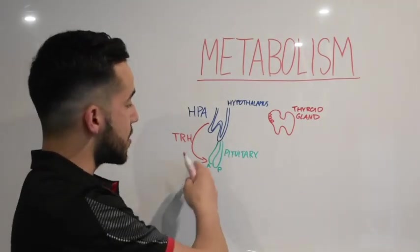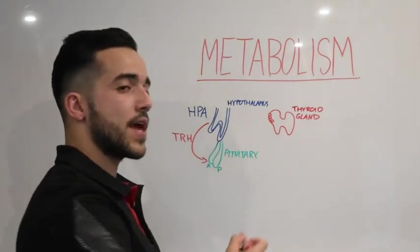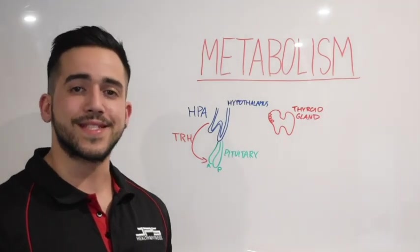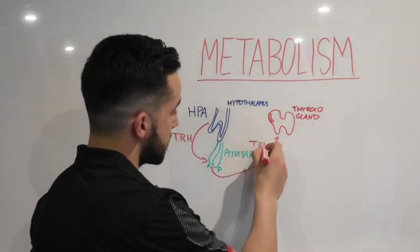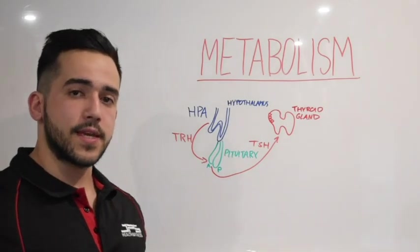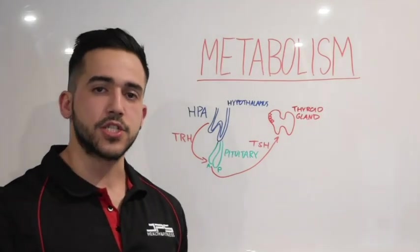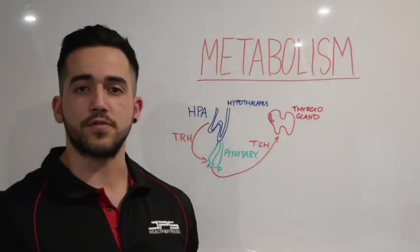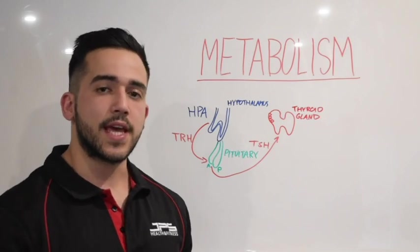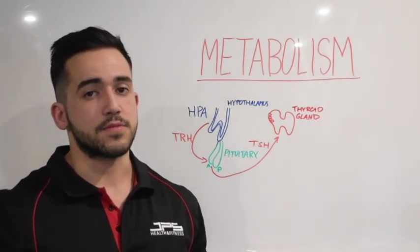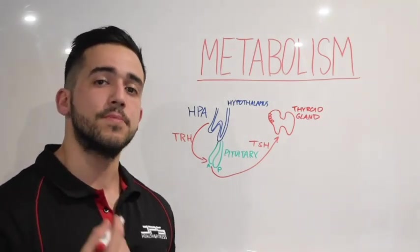The anterior pituitary gland reads those signals — the hormone binds to certain receptors on the gland — and the anterior pituitary then sends out another signal to the thyroid gland. This signal is called thyroid-stimulating hormone, or TSH. There are going to be a lot of enzymes and receptors working in this process to make sure signals are sent to the right places and interpreted correctly, but we're going to skip that complexity and keep it simple.